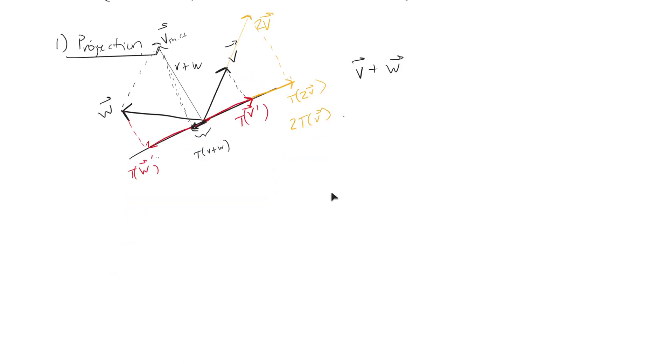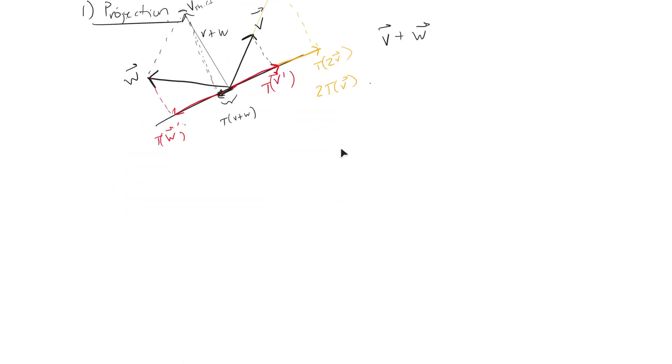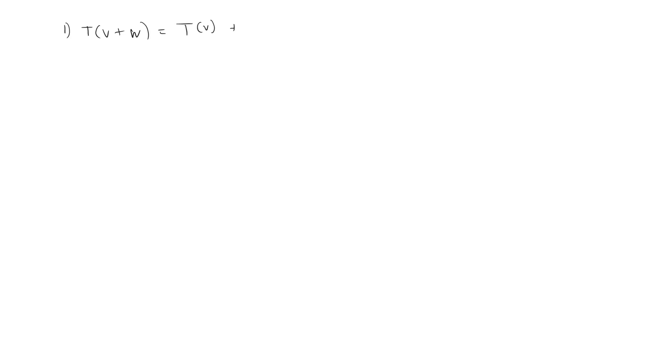Let me get some space here. Let's start with the first one. The first thing we need to prove is that the transformation of V plus W equals the transformation of V plus the transformation of W.